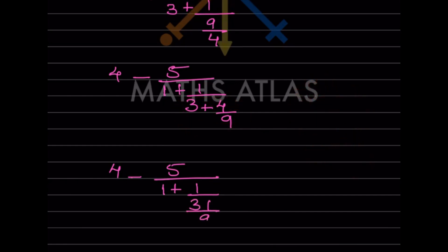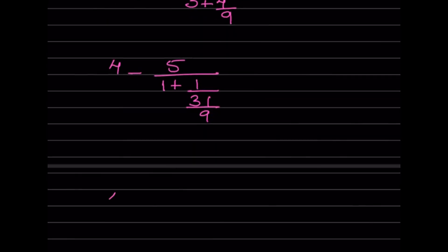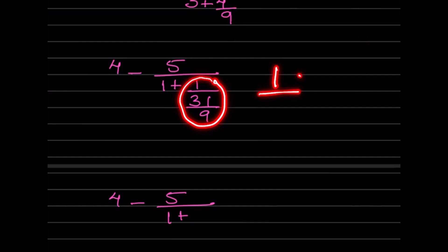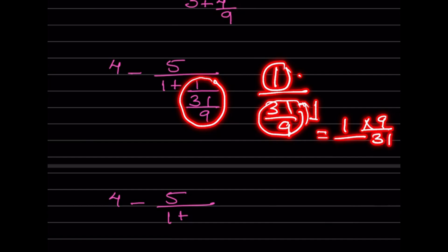We look at this part again — the rest stays the same. We write 5 by... now look: 1 divided by 31/9 means 31/9 is in the denominator. The numerator stays as it is and the denominator gets flipped, so this becomes 9/31. We write 9/31.